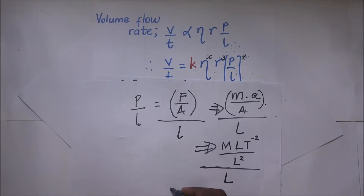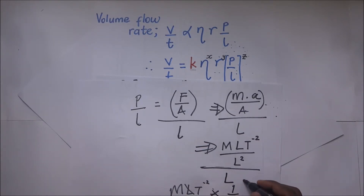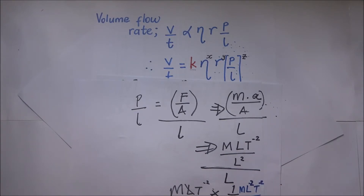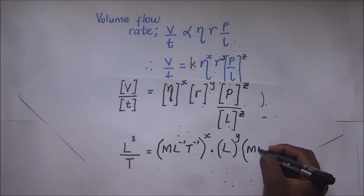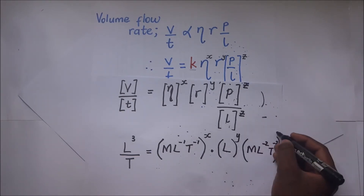Simplifying: M·L·T⁻² over L, times 1 over L. The L's cancel and we end up with M·L⁻²·T⁻². So the dimensions of the pressure gradient P/L are M·L⁻²·T⁻², and this is raised to the power z.